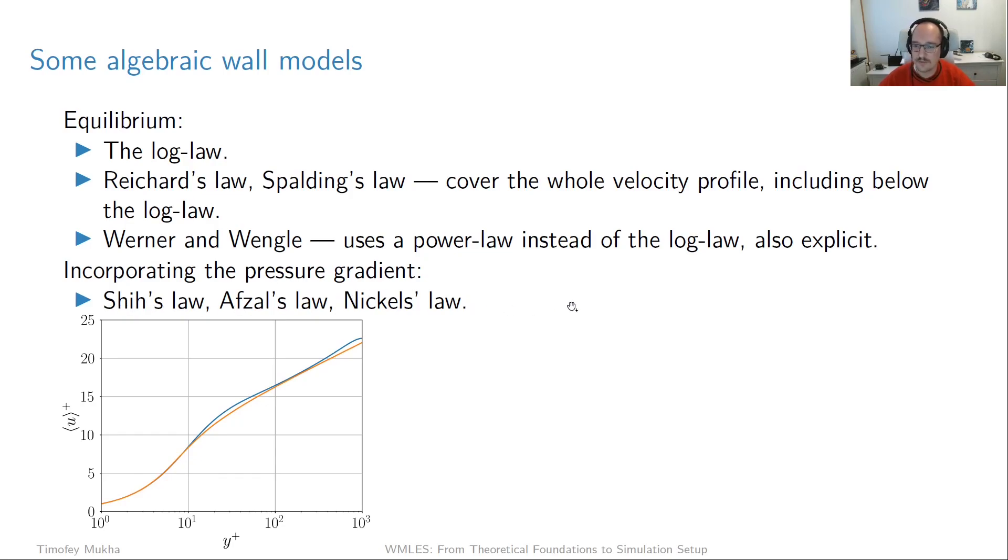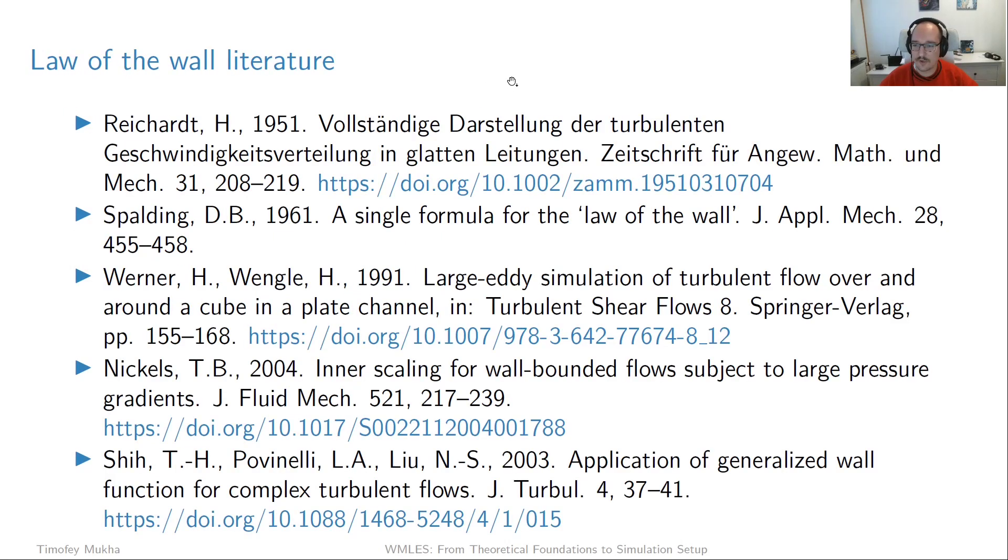So here's some pointers to the literature regarding the laws we just discussed. We have Reichardt first, 1951. Unfortunately, you have to brush up your German for this one. Then there's Spalding, 10 years later, 1961, a single formula for the law of the wall. Then there's Werner Wengle, 30 years later, 1991, Nickels, and Shih, the one that introduced the pressure gradient influence, 2003 and 2004. I think that Shih one is actually originally in a 1999 report from NASA, but this is just a more modern publication in which you can find the relevant information.